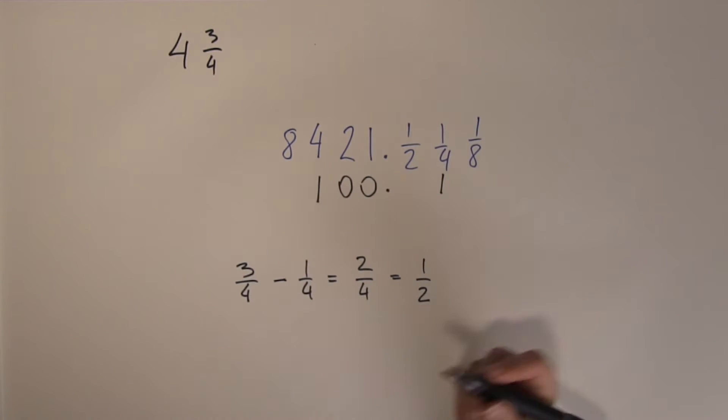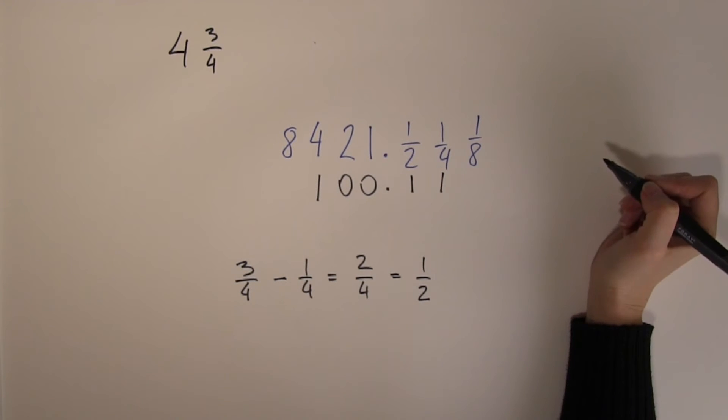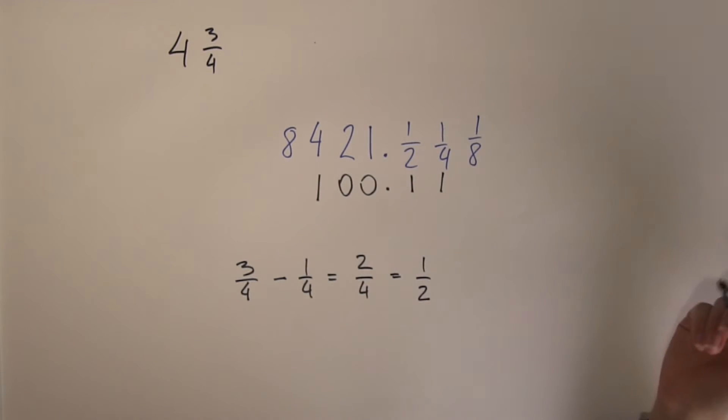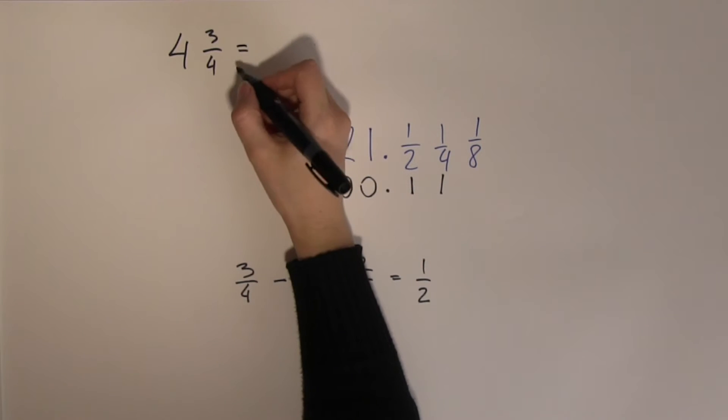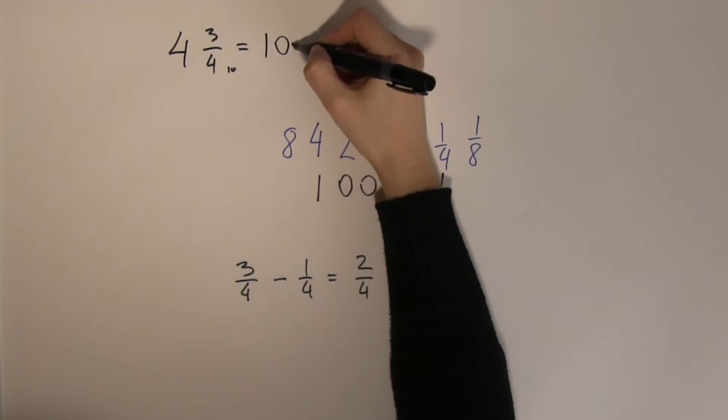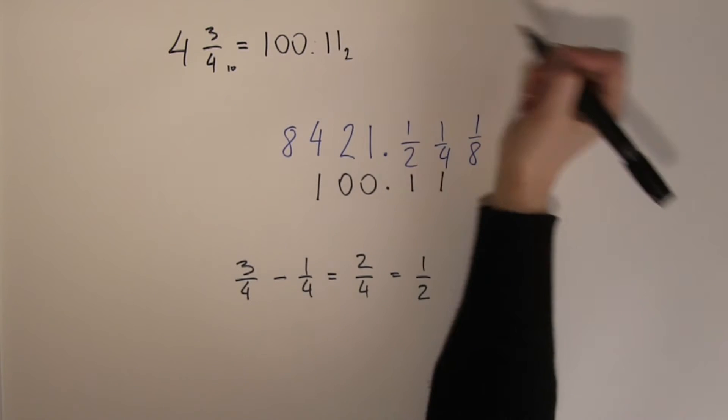2 quarters is exactly the same as a half. Well that solves my problem, because then I can just put a digit here. So you might have spotted this by knowing that a half and a quarter makes up 3 quarters. This means that 4 and 3 quarters in decimal is the same as 100 radix point 11 in binary.